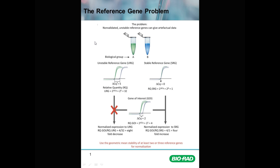Reference genes in labs are often chosen based on historical bias. Many labs typically always use the same one or two reference genes to normalize the data between all of their samples, for all of the genes and treatments they work with. The danger in doing this is that if the reference genes themselves have not been validated to assure that they are stable between samples, they can dramatically change the data.